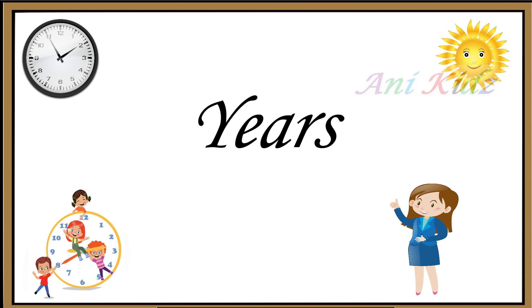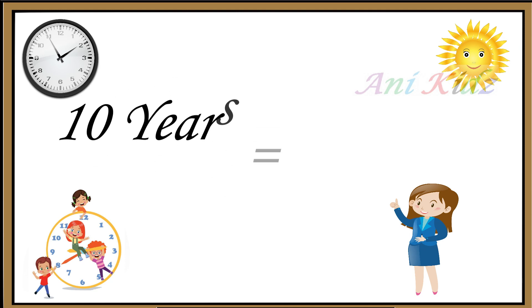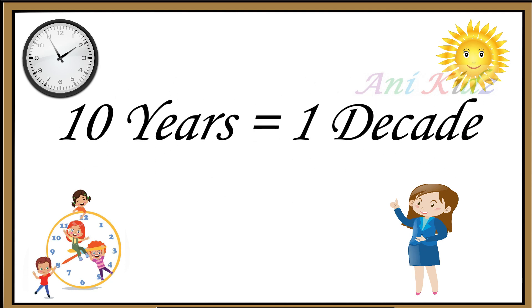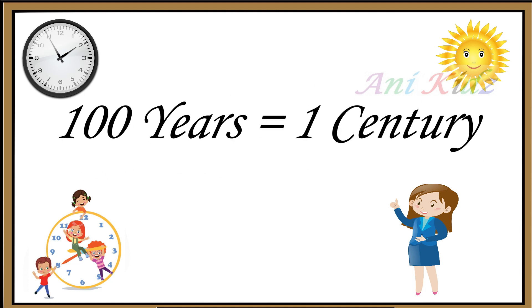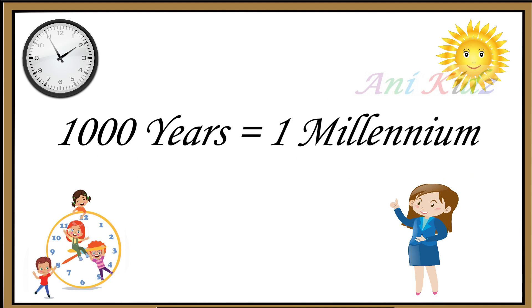And the next bigger unit is years. Ten years is equal to one decade. Hundred years is equal to one century. Thousand years is equal to one millennium.